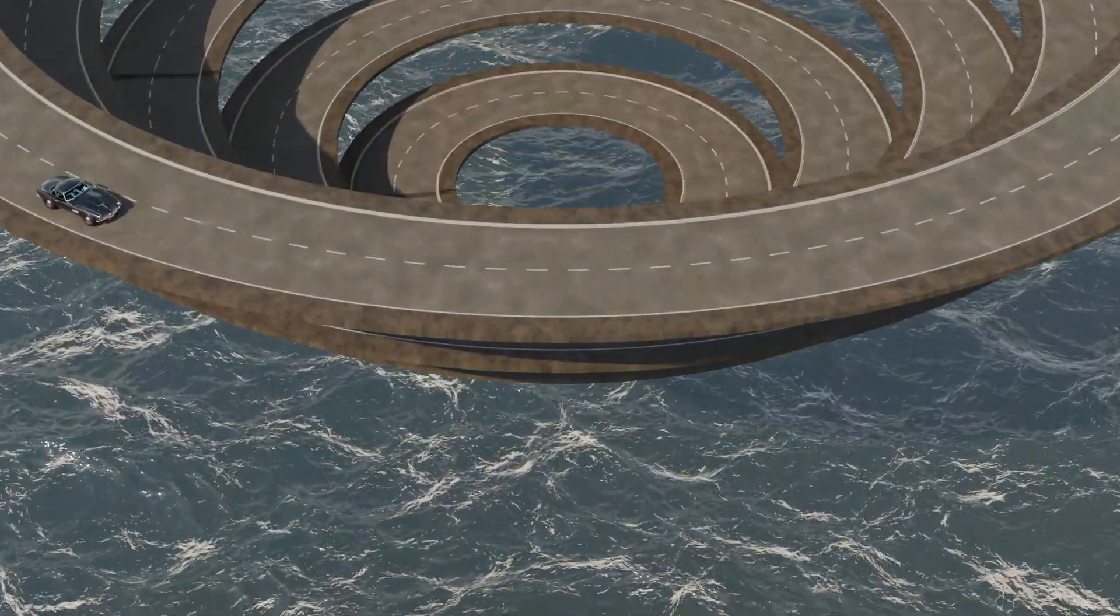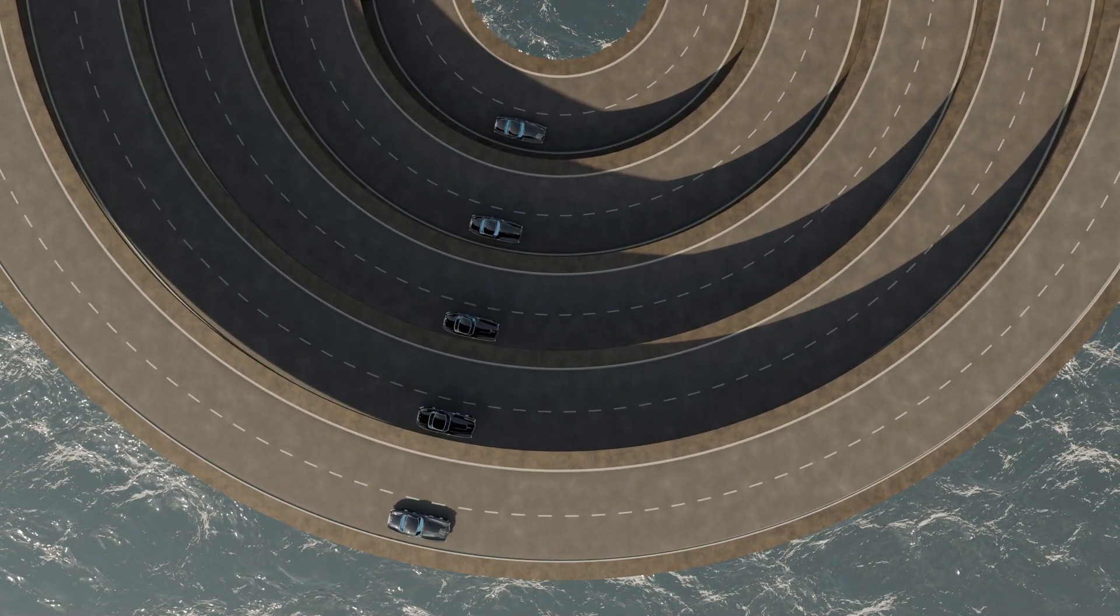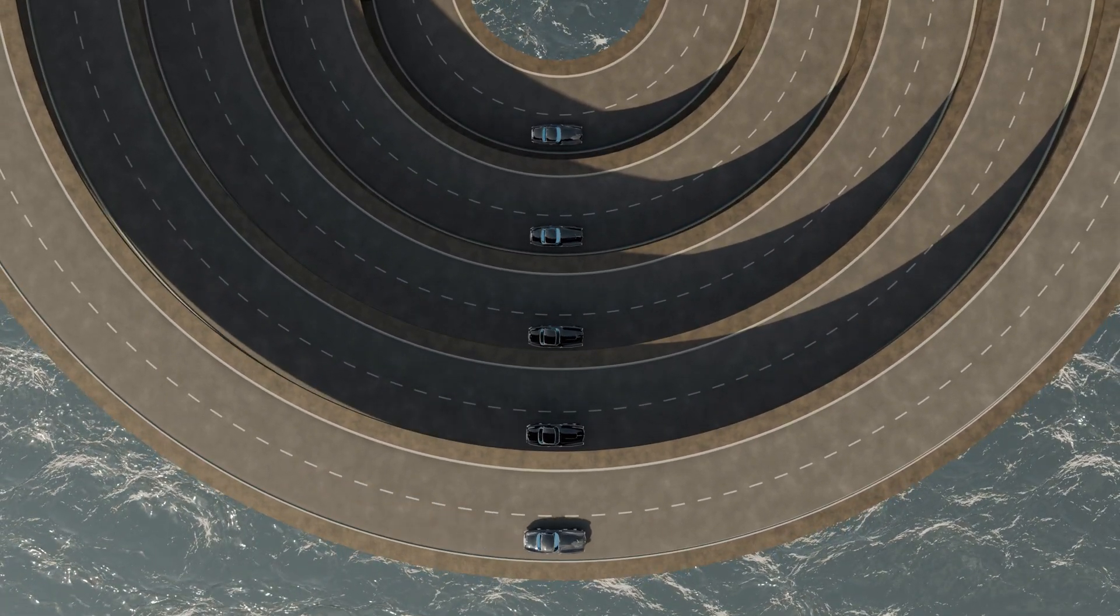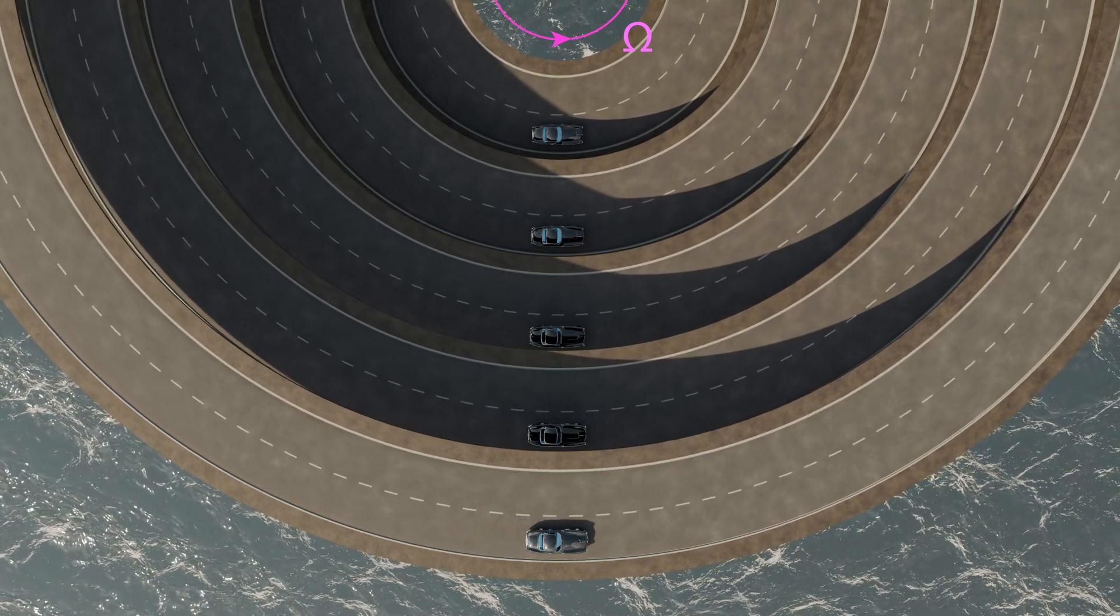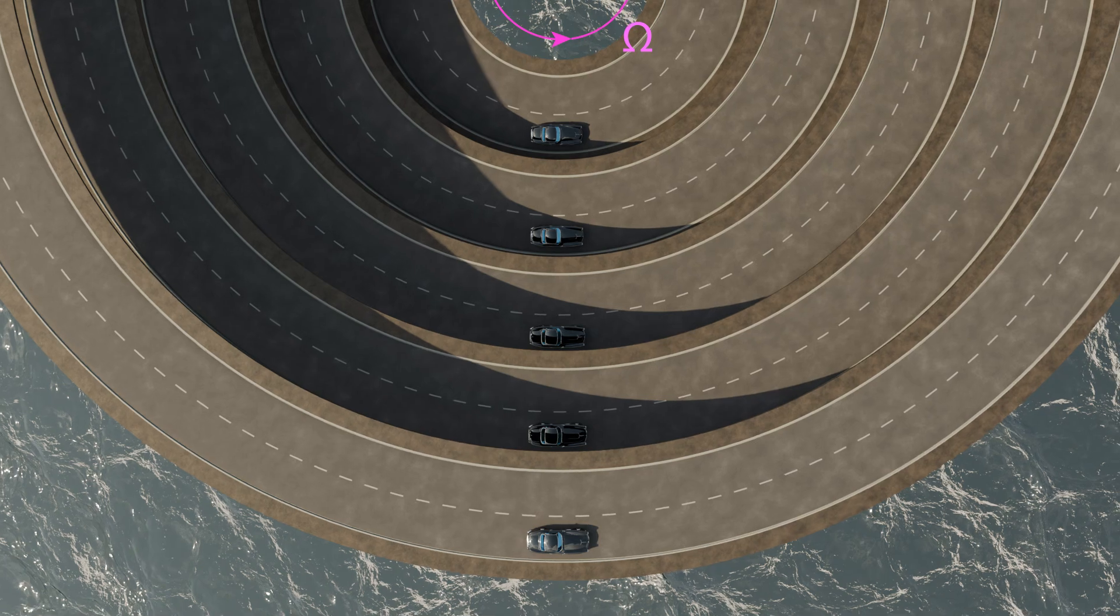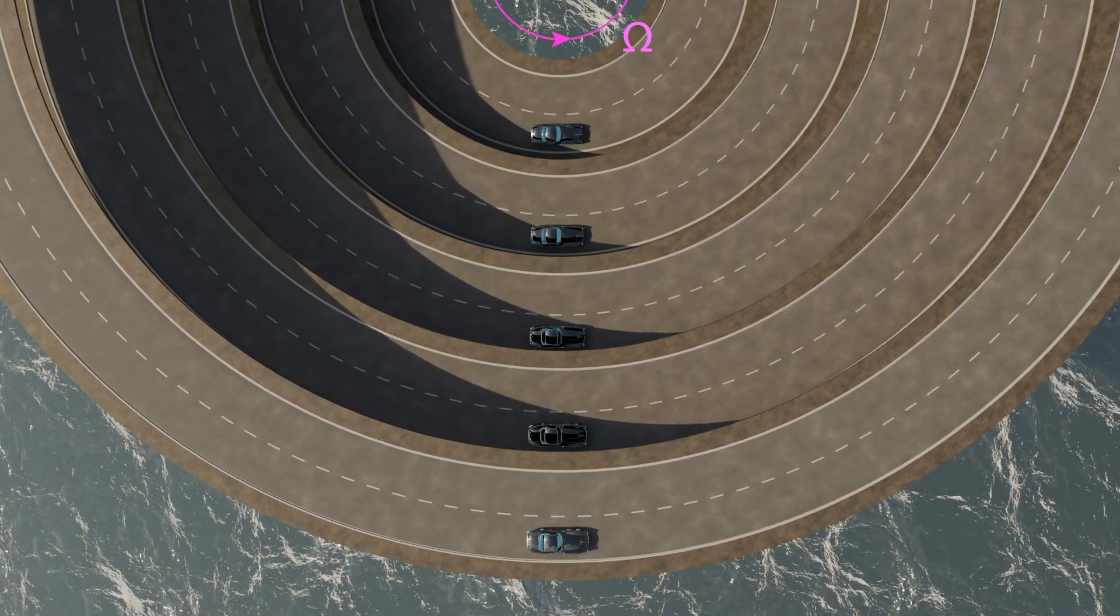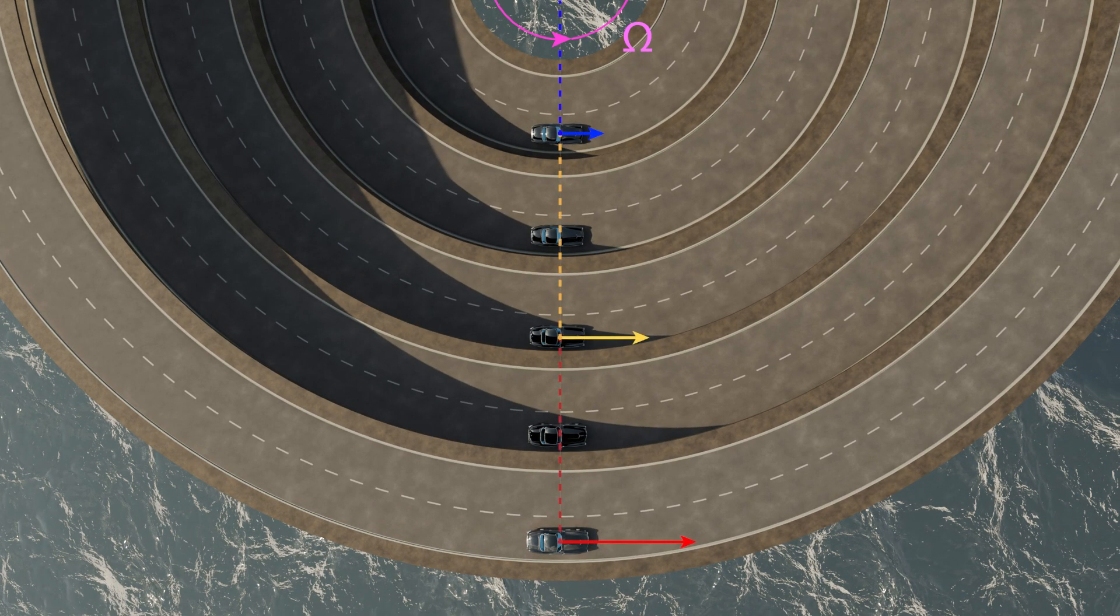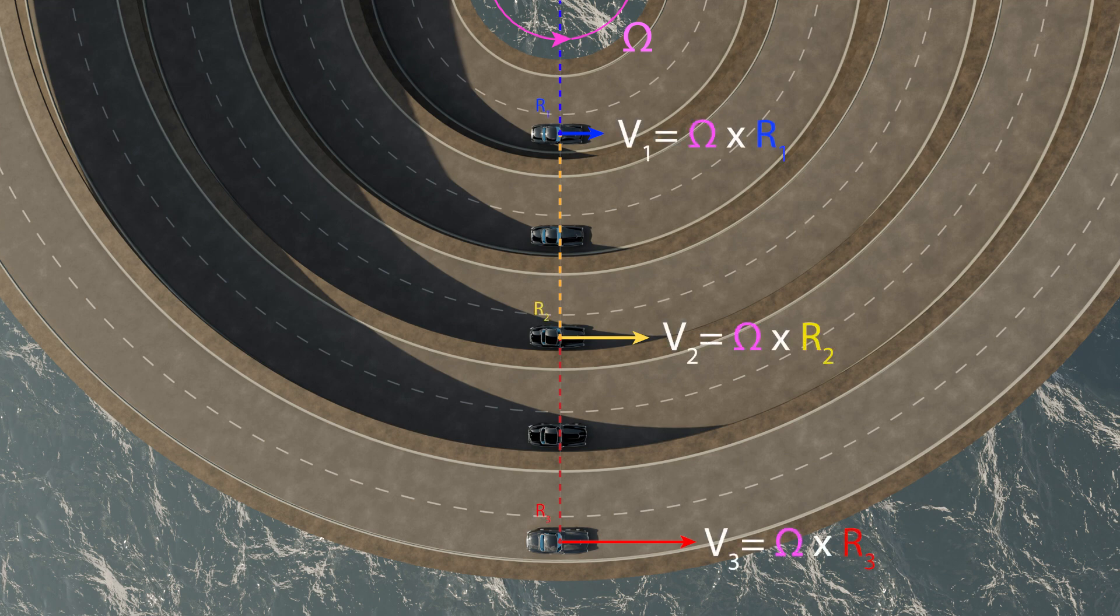If all the cars complete a lap in the same amount of time, we say these cars have the same angular velocity, denoted by the symbol omega. As you can see, the car in the outermost lane has to move much quicker than the innermost car to complete a lap at the same time. In fact, their straight line velocity increases linearly with their distance from the centre.